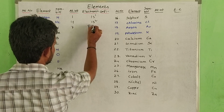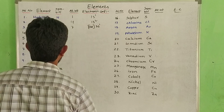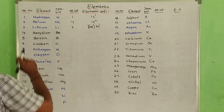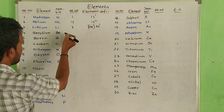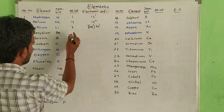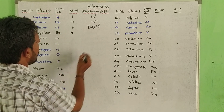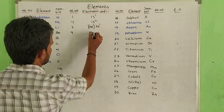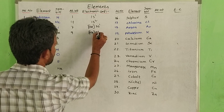Next: lithium, atomic weight 3 — it can be written as [He] 2s1. Next: beryllium, fourth element, atomic weight 4 — it can be written as [He] 2s2.